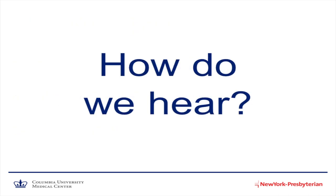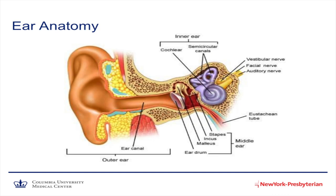So first of all, how do we hear? In order for us to understand how we hear, we need to first understand the structure of the ear. So first, here is the outer ear that is composed of the ear that we all know and love, as well as the ear canal.